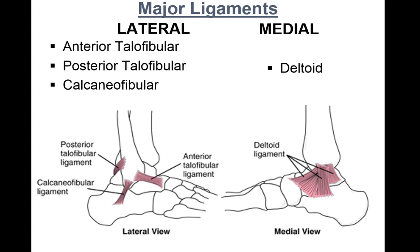Major ligaments are best classified as lateral or medial. On the lateral side you have your anterior talofibular, posterior talofibular, and calcaneofibular ligaments. The anterior talofibular is hands down the most common site of an ankle sprain — most ankle sprains occur on the lateral side, with less than 5% involving the deltoid ligament medially. The mechanism is plantarflexion and inversion.